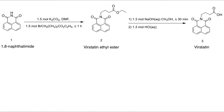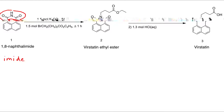Verstatin is a virulence inhibitor and can be synthesized using 1,8-naphthalamide. 1,8-naphthalamide contains a functional group known as an imide. By reacting 1,8-naphthalamide with certain reagents, we convert the imide functional group into an ester group.